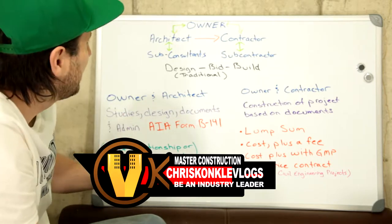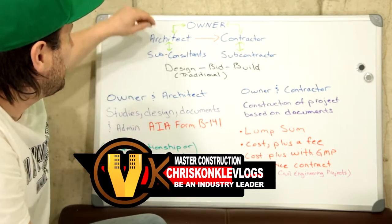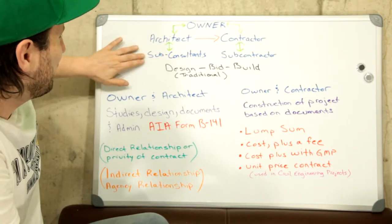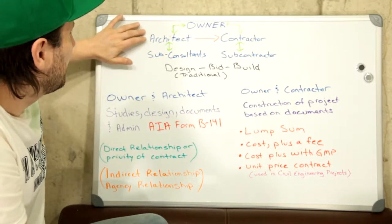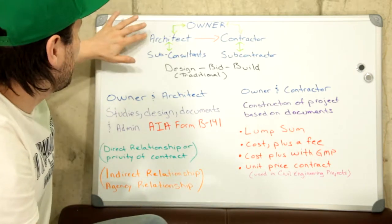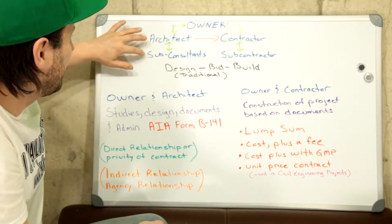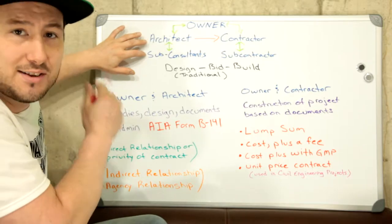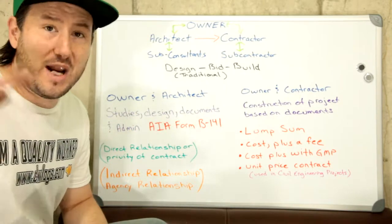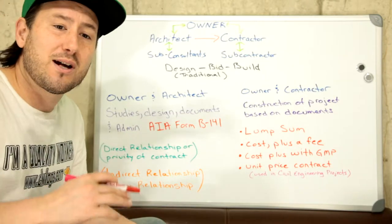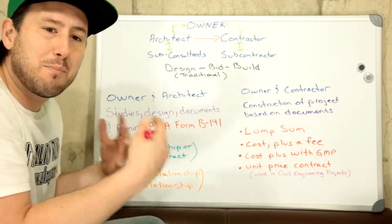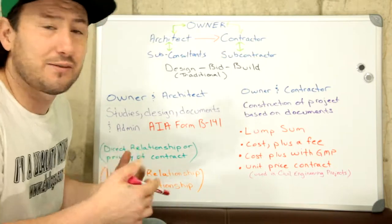The owner will go into a direct contractual — privity of contract — relationship with the architect. That form is the AIA, American Institute of Architects, form B141. Now, the owner has no relationship with the sub-consultants, who would be engineers and people like that. The architect enters into a contract with the sub-consultants, which is a separate contract we'll be getting into in the next episode.